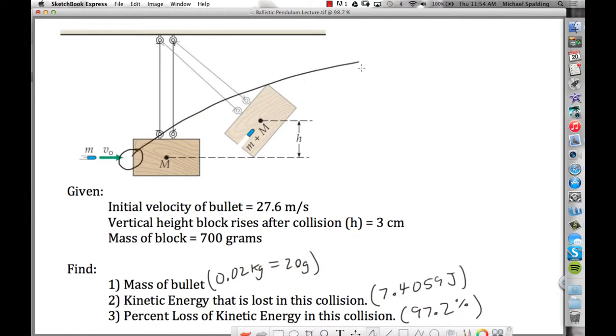So I'm going to say that the bullet is object one, the block is object two, so conservation of momentum would be M1V1 initial. That's the initial momentum of the bullet, plus M2V2 initial, what would that be? The initial momentum of the block, but is the block moving before the collision? No, so that just goes to zero, so let's just take this out completely.